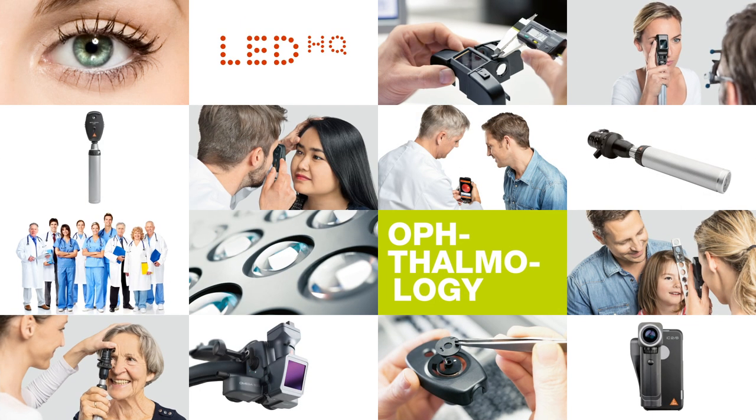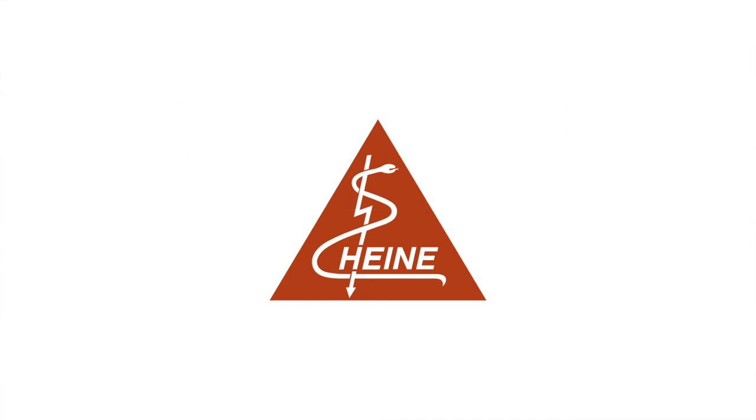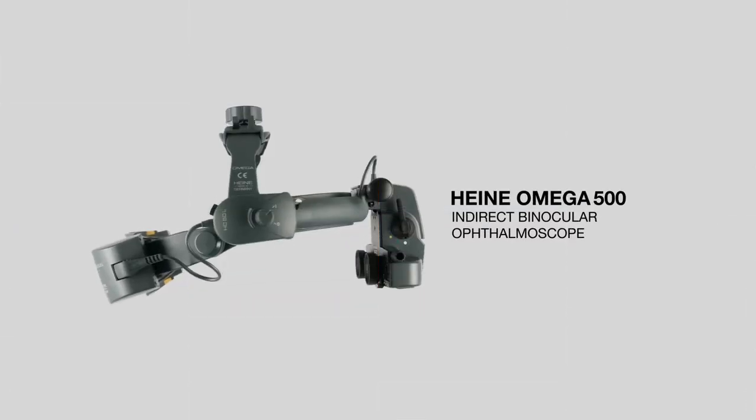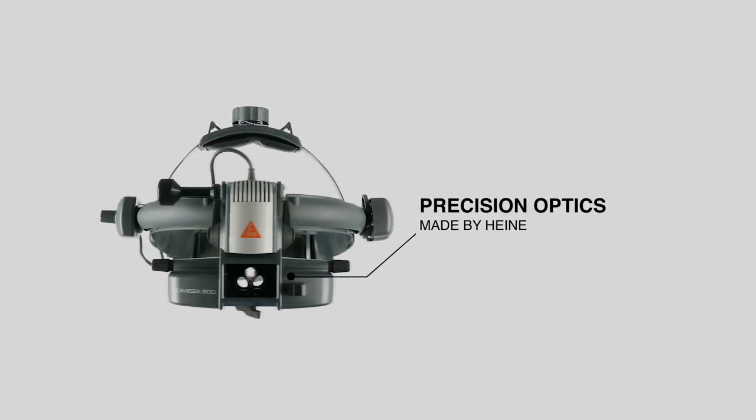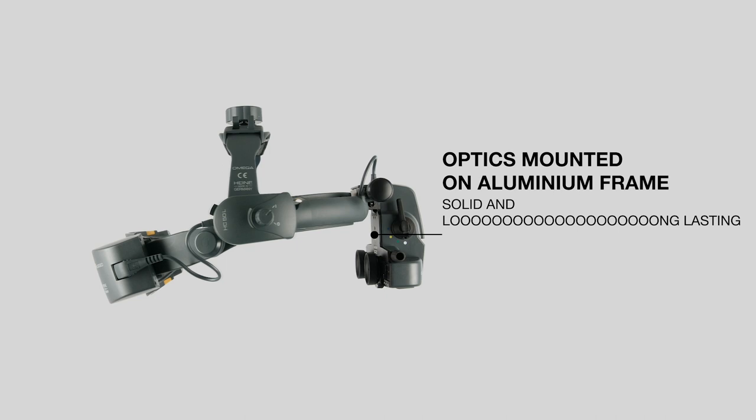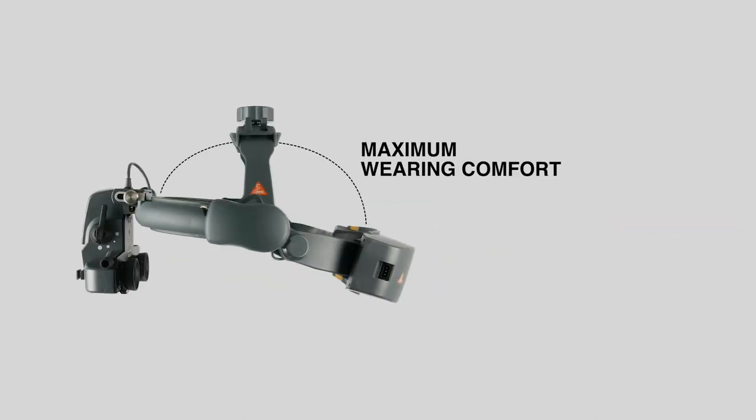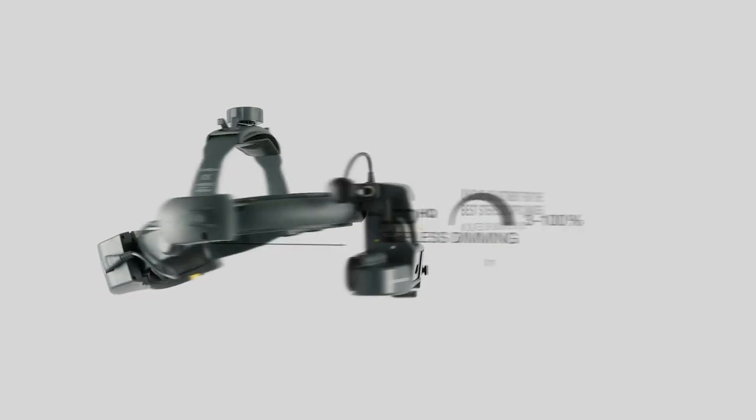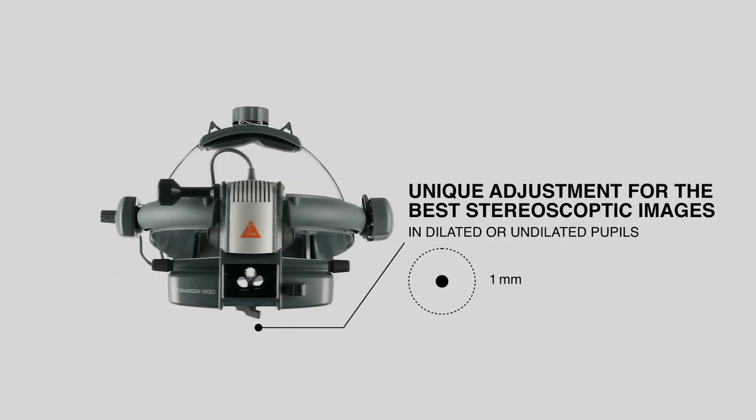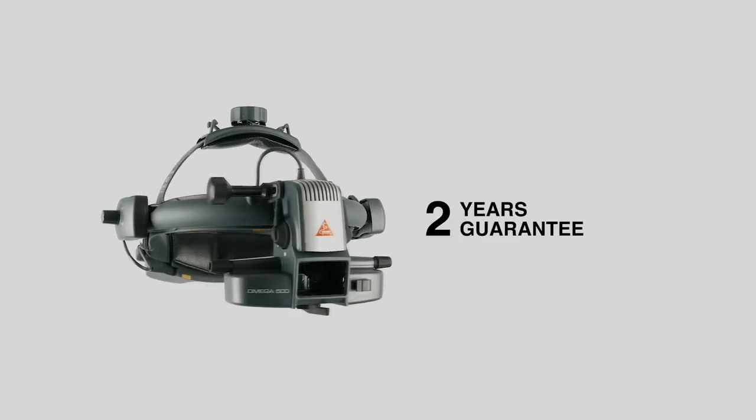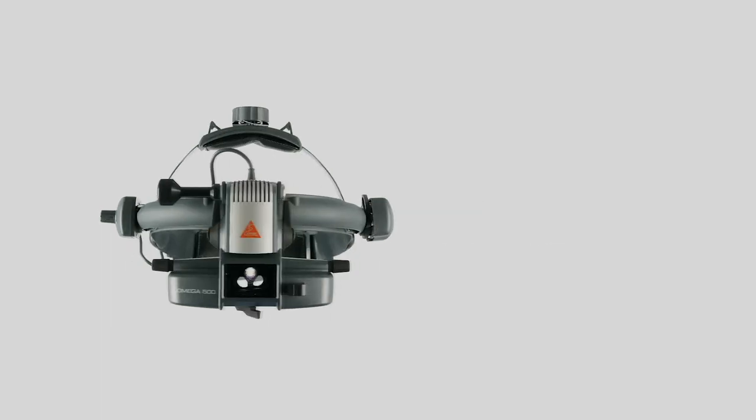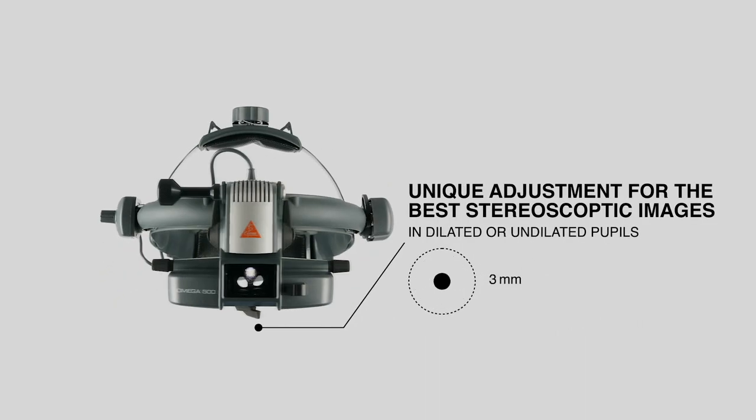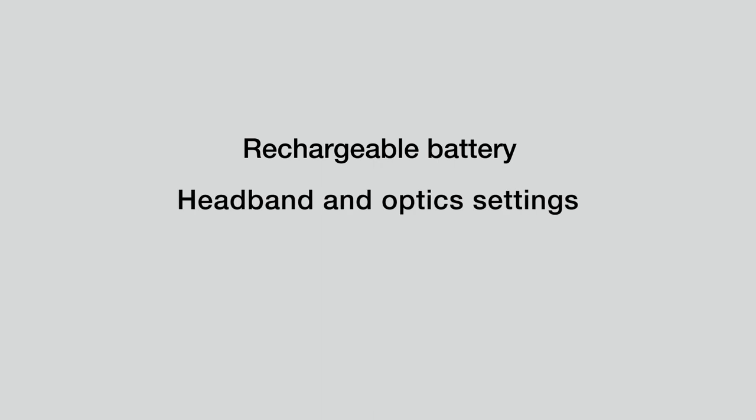Thank you. We have divided the film about the handling of the Heine Omega 500 indirect binocular ophthalmoscope into three chapters: rechargeable battery, headband and optic settings, and controls.